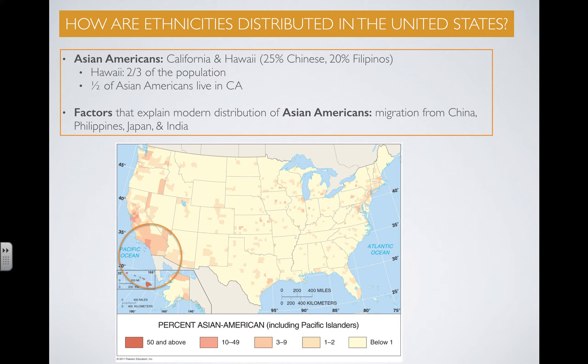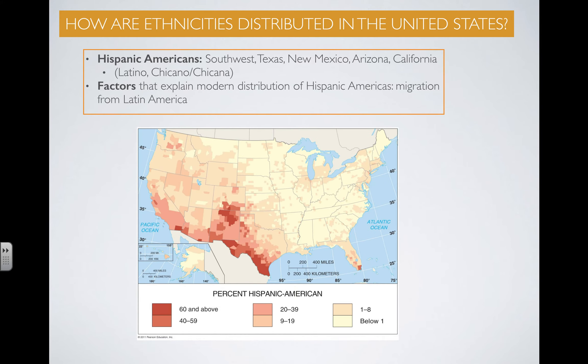The factors that explain the modern distribution of Asian Americans are simply the migration from China, the Philippines, Japan, and India. These are both historic and modern migration patterns, and that helps us see the percentage of Asians concentrated in those areas.